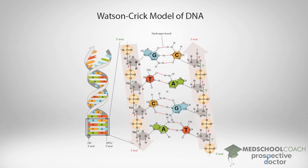The two single-strand DNA molecules are formed together into a double helix because of favorable interactions between them. This works because the two single-stranded DNA molecules are complementary to each other based on Watson-Crick base pairs — anytime there is an adenine in one DNA molecule, the other has a thymine, and similarly anytime you have a guanine in one strand, the other has a cytosine. The two strands are held together by hydrogen bonds between the base pairs as well as base stacking.